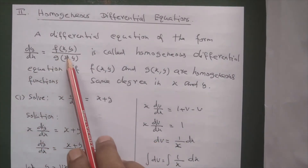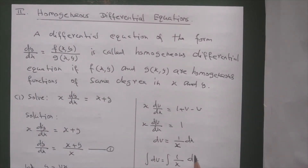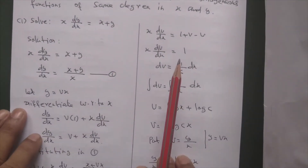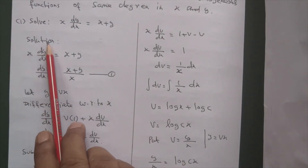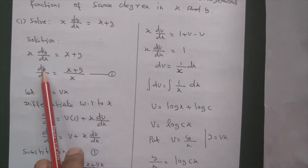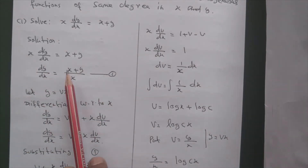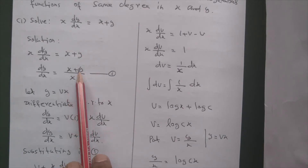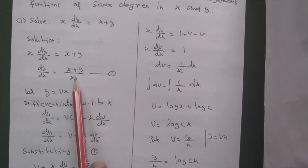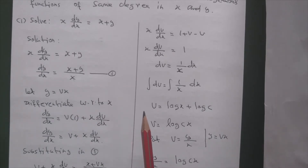Let's look at the first example. dy/dx equal to x plus y by x — this is equation 1. If you look at x plus y, x has power 1 and y has power 1, so x plus y is degree 1. The denominator x is also degree 1. So dy/dx equal to (x+y)/x is a homogeneous differential equation.